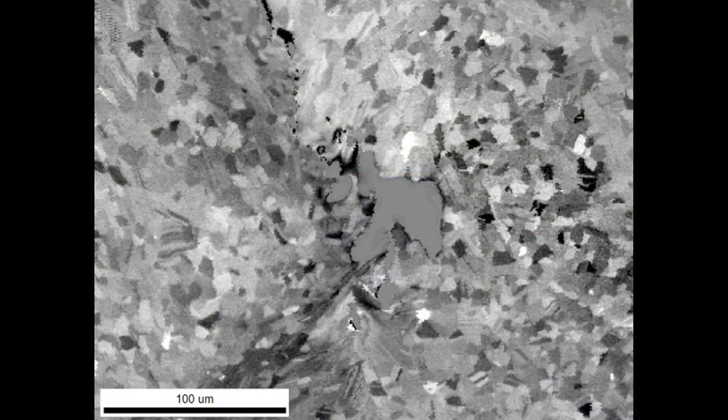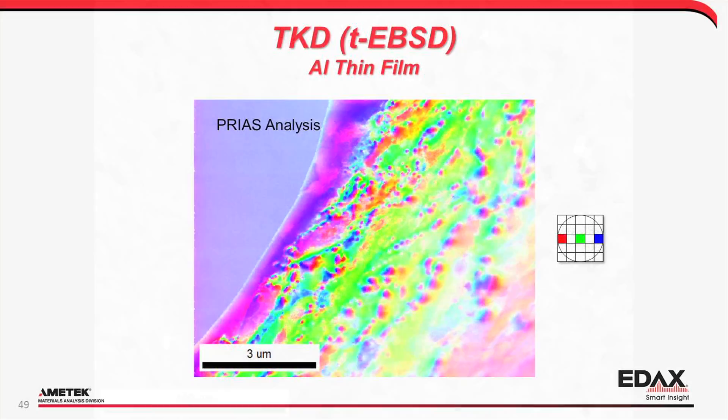PRIUS Imaging is also compatible with transmission EBSD, providing more detail in electron transparent materials than is often visible with other imaging contrasts. By combining multiple ROI detectors with flexible image visualization and analysis, PRIUS enables exciting new insights into today's materials analysis.